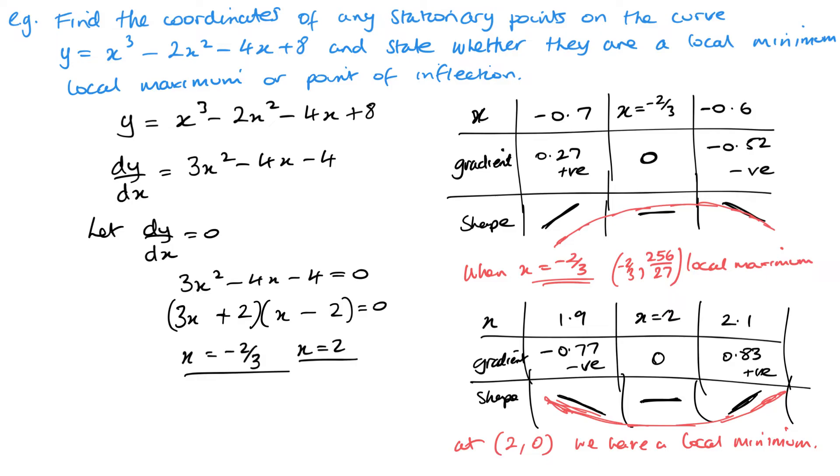And this is the kind of way in which you look at whether it's going to be a maximum, a minimum. And again if it was a point of inflection you'd have say a positive, a 0, a horizontal, and then another positive, or a negative, horizontal, and negative.